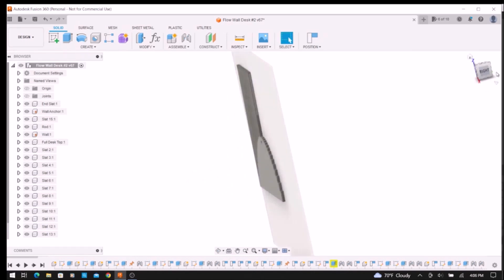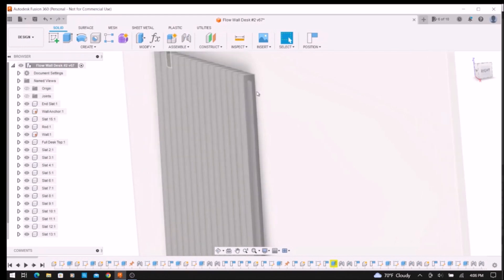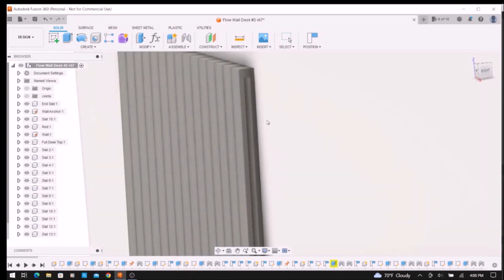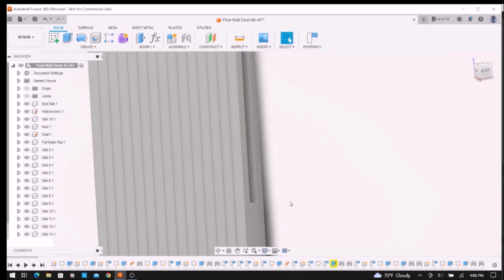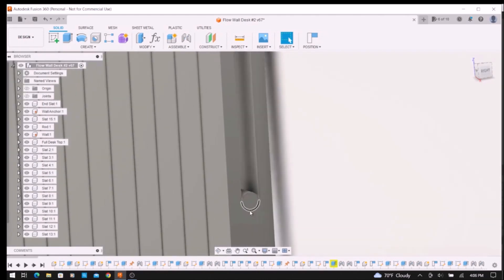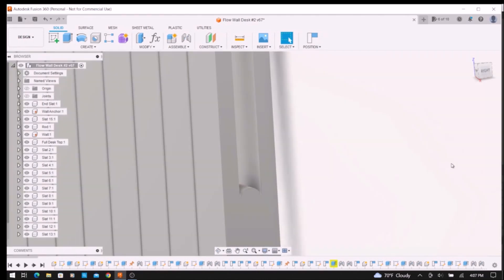Each slat has a slot routed in it, and here we see the slot in the 15th slat. At the bottom of the slot we see the steel rod that rides in the slot.